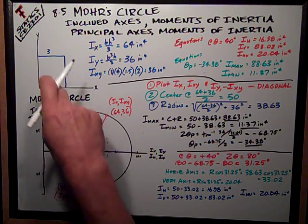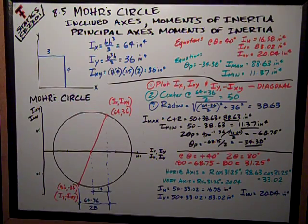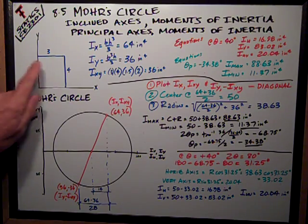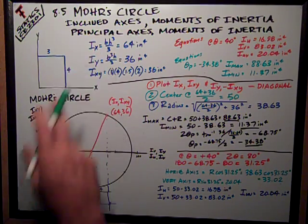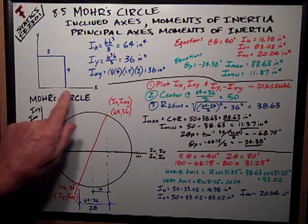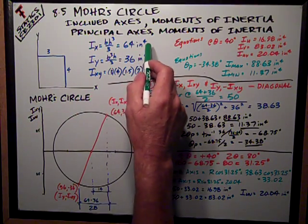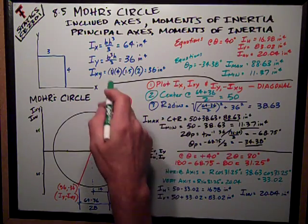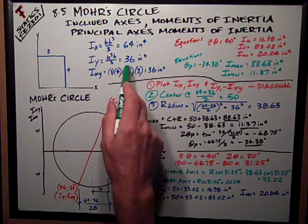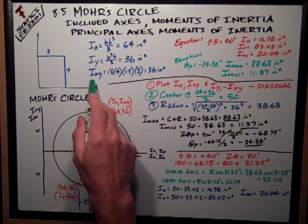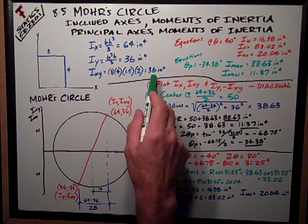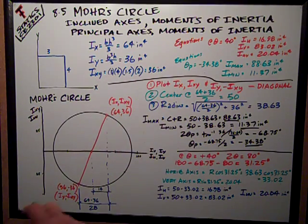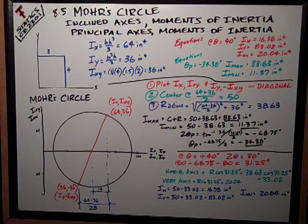We've been using an example on the other two videos of this rectangle that's 3 by 4. We computed earlier that ix, the moment of inertia about the x-axis, is 64 inches to the 4th, iy is 36 inches to the 4th, and the product of inertia is 36 inches to the 4th also. There's the brief calculations for it.